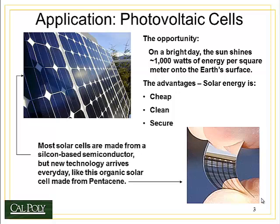Let's look at an application: photovoltaic cells, or solar cells as they're more commonly known. On a bright day, approximately 1,000 watts of energy per square meter falls onto the Earth's surface on average. The advantages of solar energy are that it's cheap, clean, and secure — we don't have to get our energy from other countries. Most solar cells today are made from a silicon-based semiconductor, which you can see in the picture on the upper left.